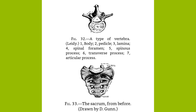In the case of the coccyx, also the four original bones, all rudimentary in character and supposed to be the survival of a tail, grow together to form one bone. Together, the sacrum and coccyx form the posterior wall of the true pelvis.